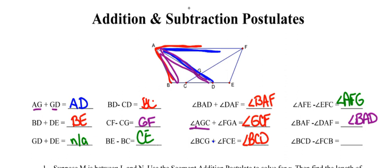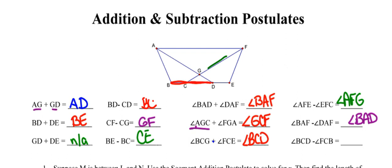Lastly, using the same approach for the final question: angle BCD is the straight angle. From that we subtract angle FCB, which is the part represented by the green. That leaves us with the part represented by blue — angle FCE.